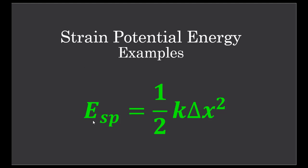The equation we use is capital E for energy, subscript SP for strain potential. That's the symbol used for strain potential energy, and it's equal to half K, the spring constant, multiplied by delta x squared, where delta x is the extension or in some cases compression of the spring.